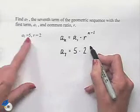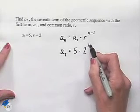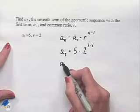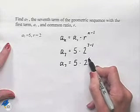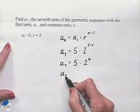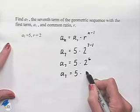Now we'll just evaluate the right-hand side: 5 multiplied times 2 to the sixth power. That's going to be a₇ equals 5 times 2 to the sixth, which equals 64.